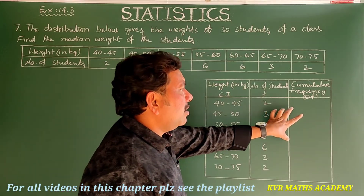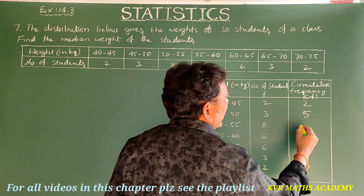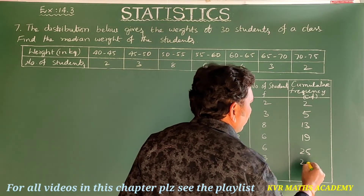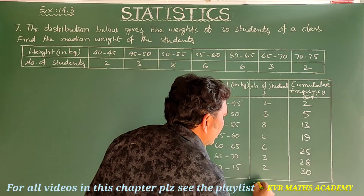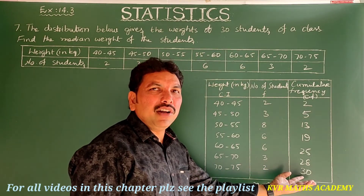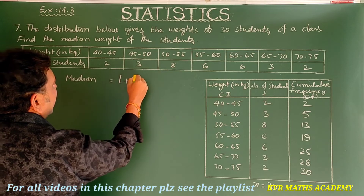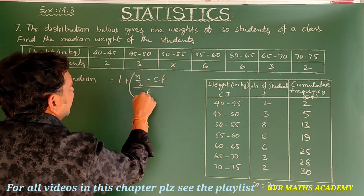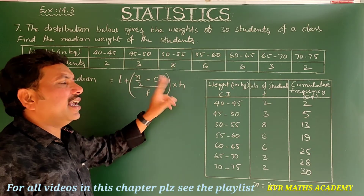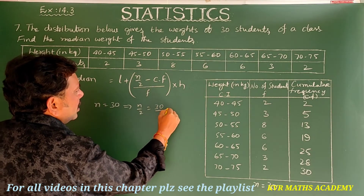For finding the median, we use: Median = L + (n/2 − cf) / f × h. Here n = 30, so n/2 = 15. Looking at the cumulative frequencies — 2, 5, 13, 19 — the value 15 falls under 19, so the median class is 55–60. The corresponding frequency f = 6, and the preceding cumulative frequency cf = 13.